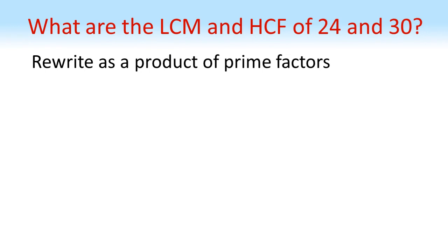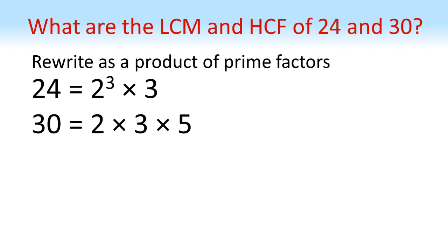Firstly, we're going to rewrite each number as a product of its prime factors. If you're unsure how to do this, check out my video on using prime factor trees. So 24 as a product of prime factors is 2³ × 3, and 30 equals 2 × 3 × 5.